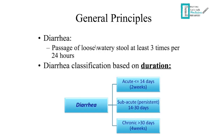Acute diarrhea starts from day one and up to 14 days. More than 14 days and up to a month is considered subacute, also called persistent diarrhea. More than four weeks is called chronic diarrhea, which will be discussed in a separate video.